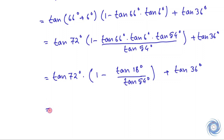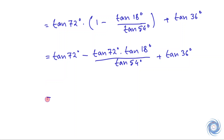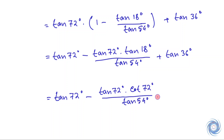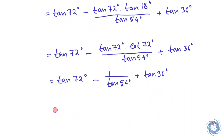And from here we have the next expression, and from here we have, and this implies the following. Since tan x is equal to cot(π/2 − x), therefore tan 18 degrees equals cot 72 degrees, and from here we have, and from here we have, and this implies the result.